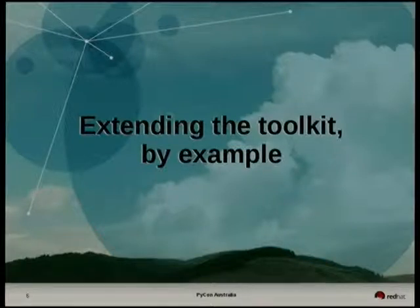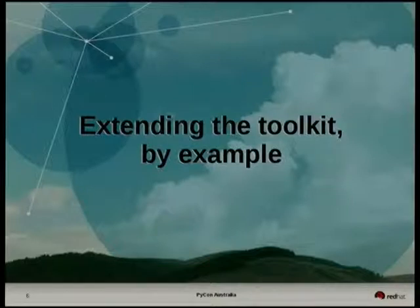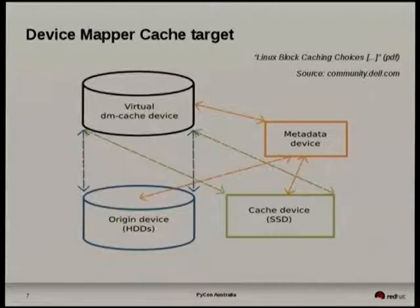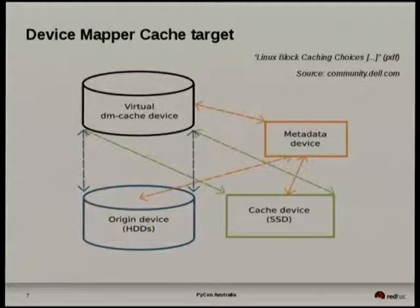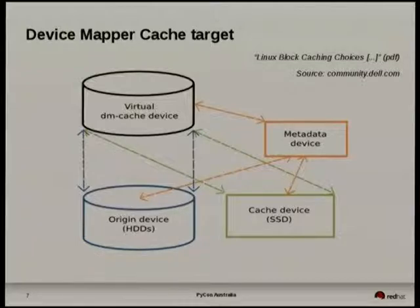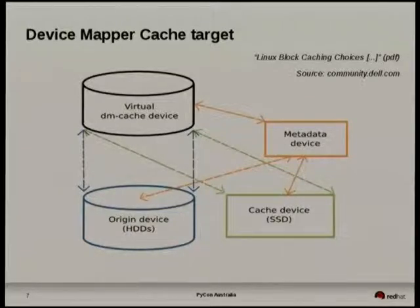This metadata will become important later because we'll be learning about how to extend and write Python PMDAs to add metrics using Python. In the second part of my talk, I want to look at a specific example: a device mapper cache target. Device mapper is a driver in the Linux kernel that lets you have multiple devices working together for a high-level device concept. The device mapper cache lets you have an SSD — a fast device — sitting in front of a slower device, optimizing access to that slower device.